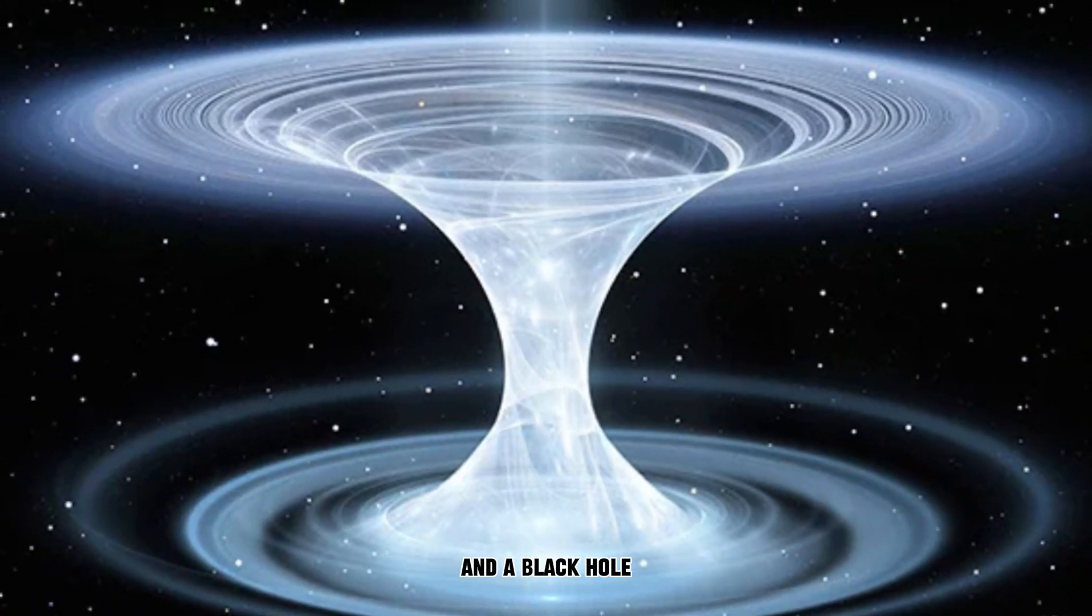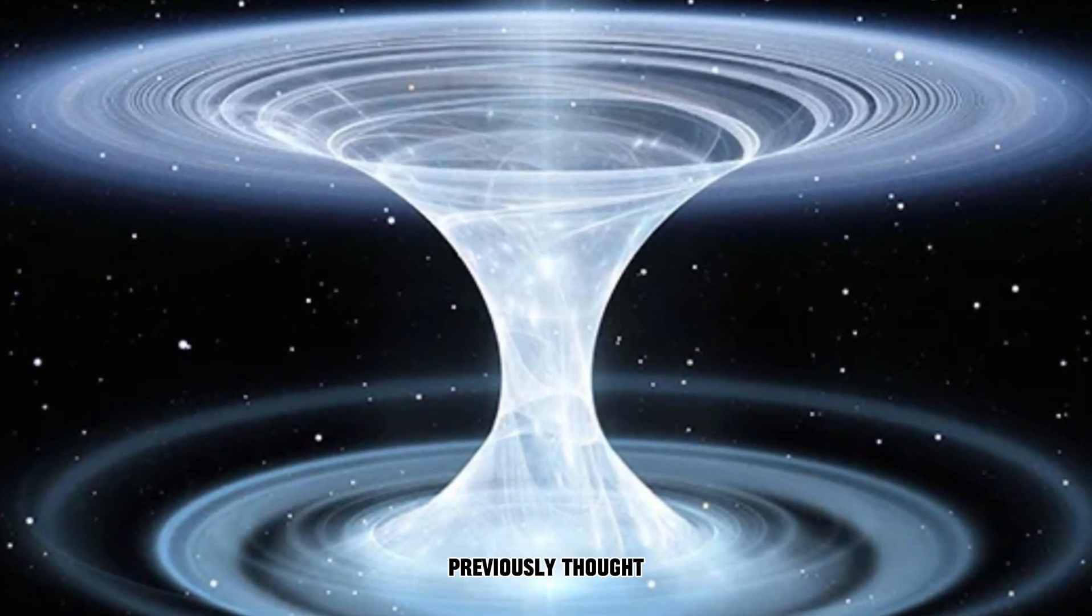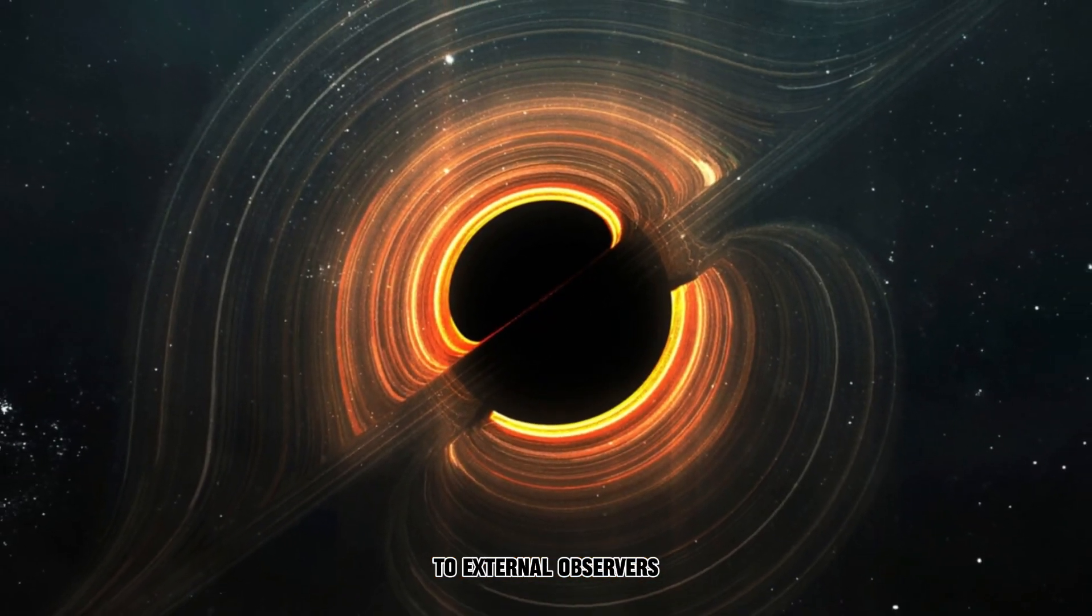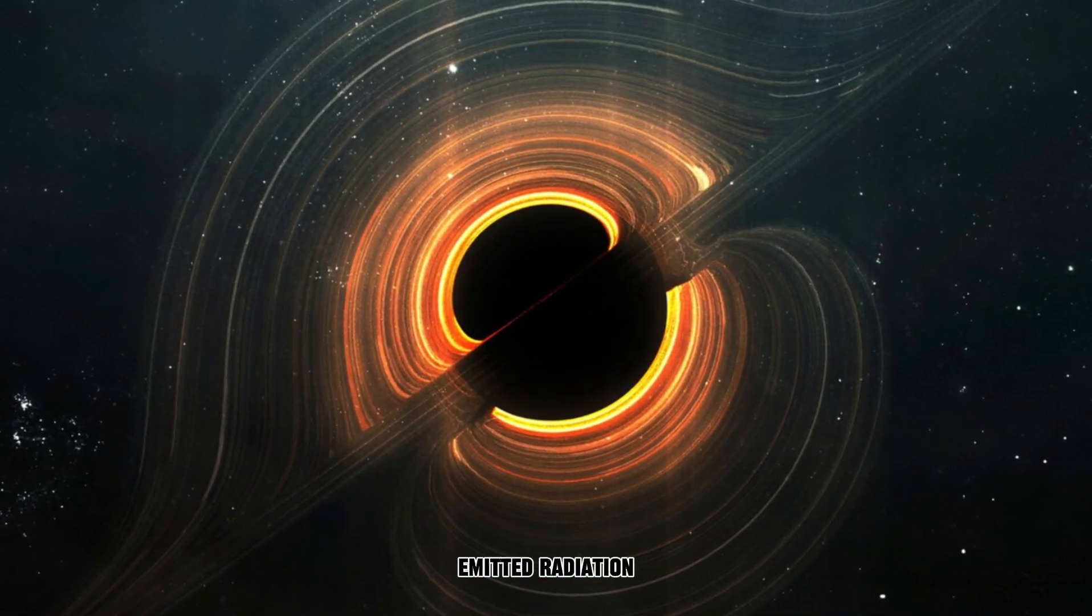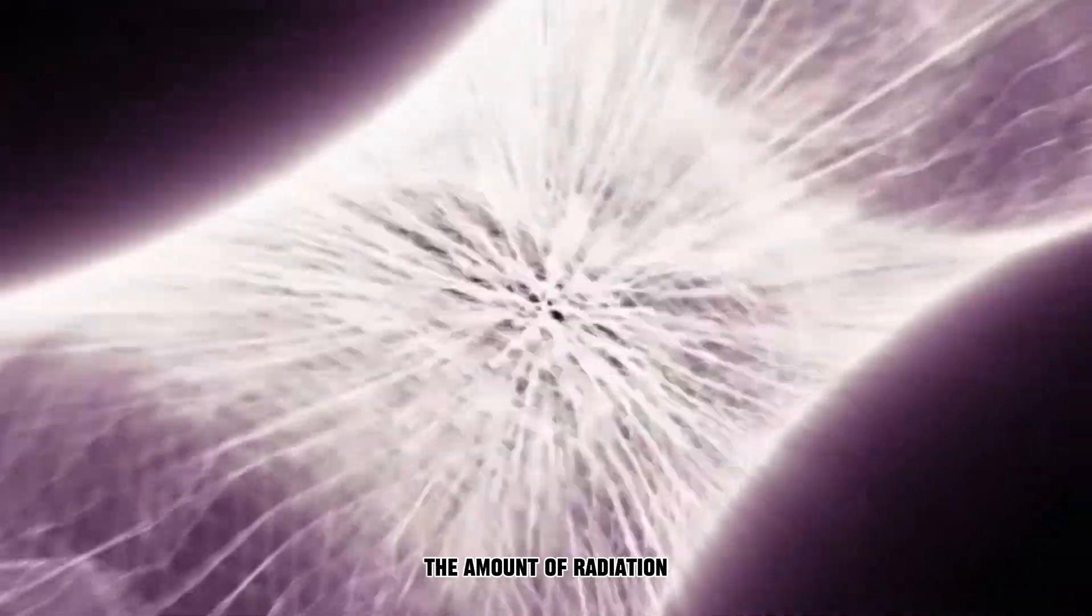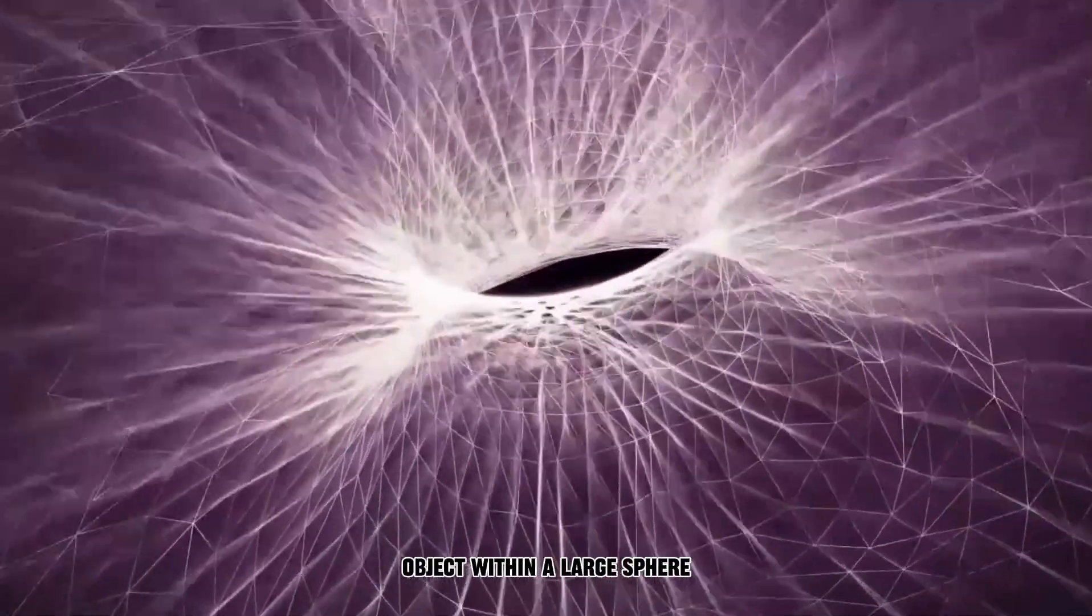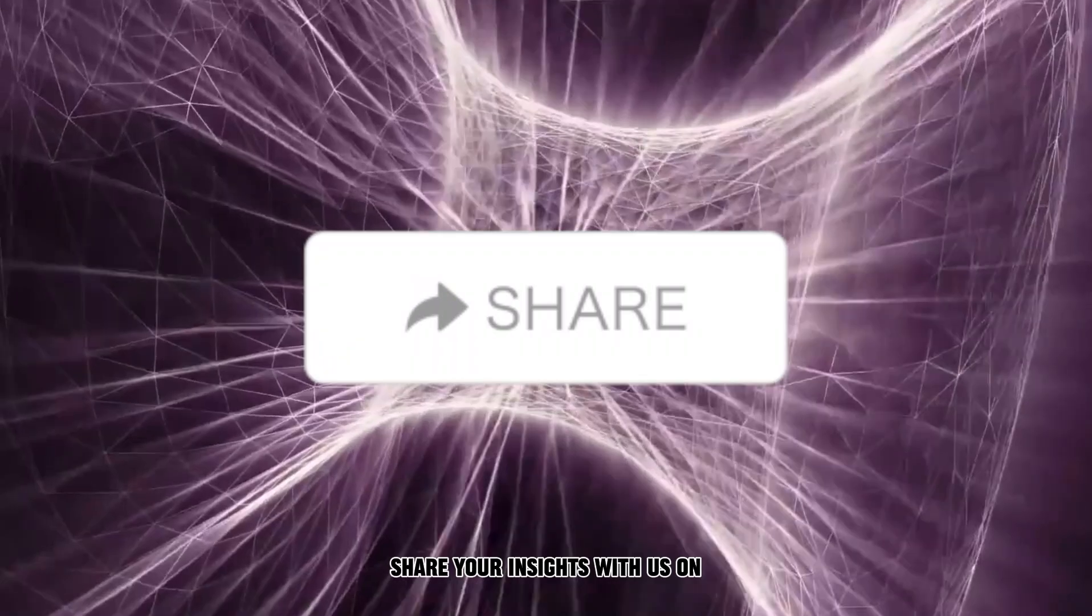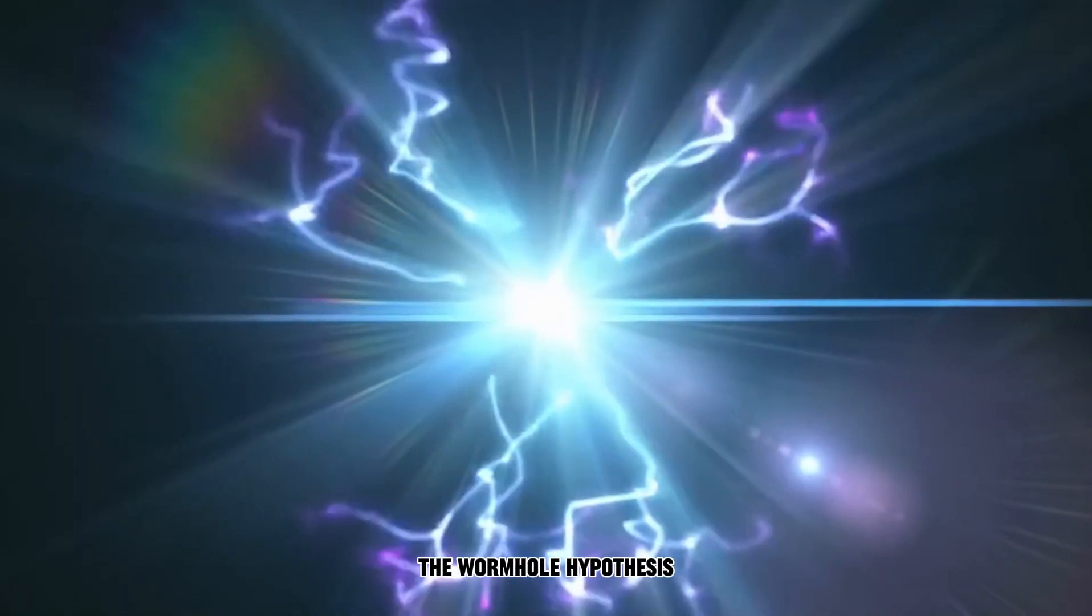Differentiating between a wormhole and a black hole, previously thought indistinguishable to external observers, lies in their emitted radiation. The amount of radiation emitted by each object within a large sphere reveals the distinction. Share your insights with us on the wormhole hypothesis.